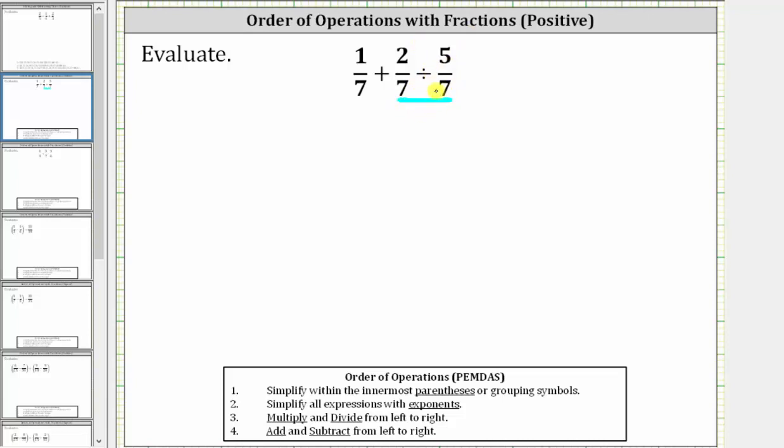However, dividing by a fraction is equivalent to multiplying by the reciprocal, which means dividing by 5 sevenths is equivalent to multiplying by 7 fifths. So let's write the expression as 1 seventh plus 2 sevenths times the reciprocal of 5 sevenths, which is 7 fifths.